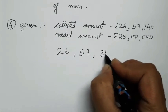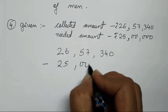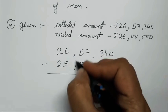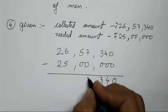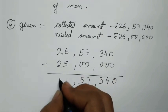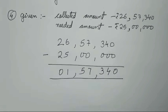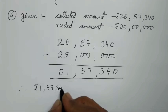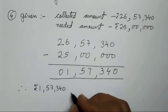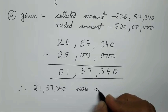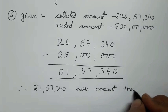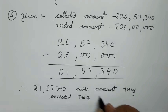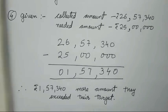26,57,340 minus 25,00,000. Writing the greater number above. Everything can be subtracted directly: six minus five is one, and zeros below. Result: rupees 1,57,340 more amount — they exceeded their target by rupees 1,57,340. I am using the same statement from the textbook for the conclusion.